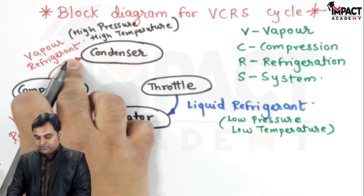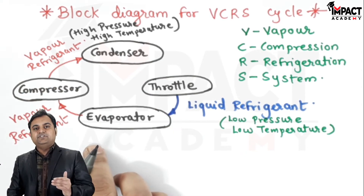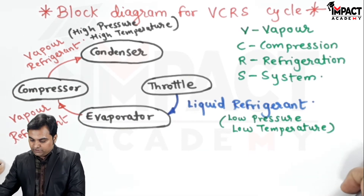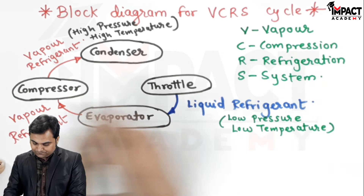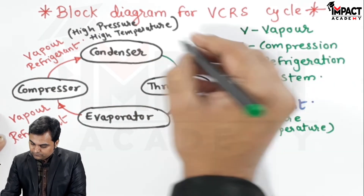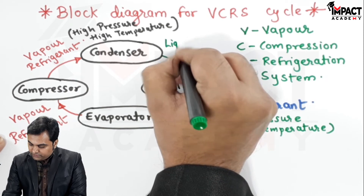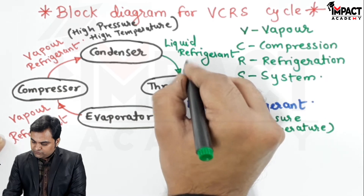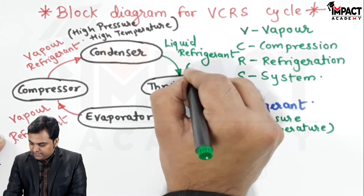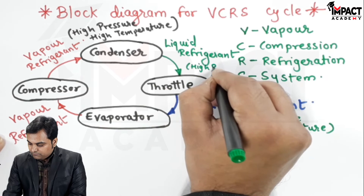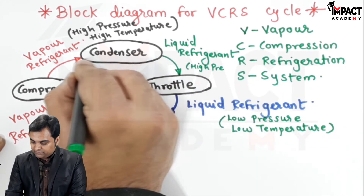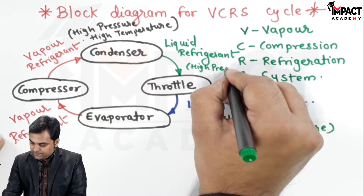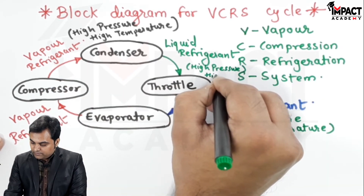The vapor entering the condenser is at a saturated condition. Inside the condenser it condenses and gets converted into liquid refrigerant. The temperature remains the same — it is latent heat condensation — so the liquid refrigerant exiting the condenser is at high pressure and high temperature.